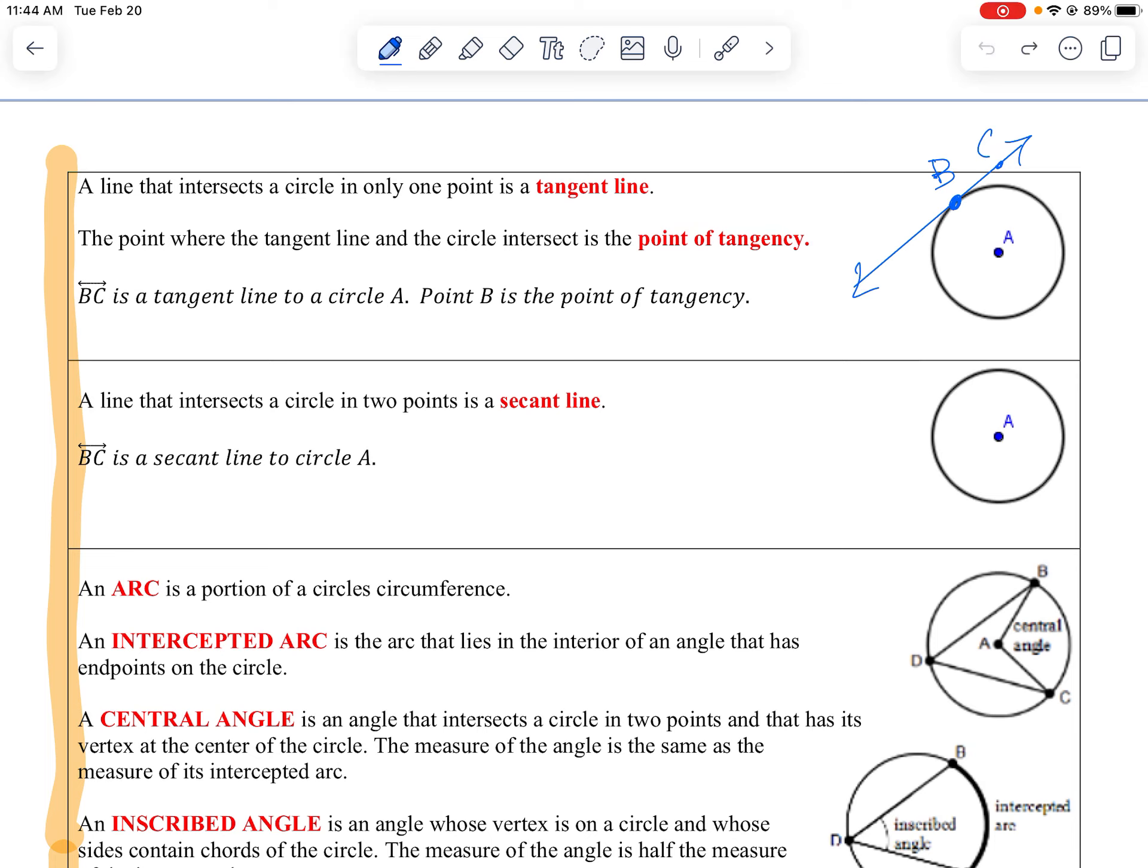And it's called tangent. So this would be a tangent line, line BC as a tangent line. And then the point of tangency is B because it's the point at which the tangent hits.